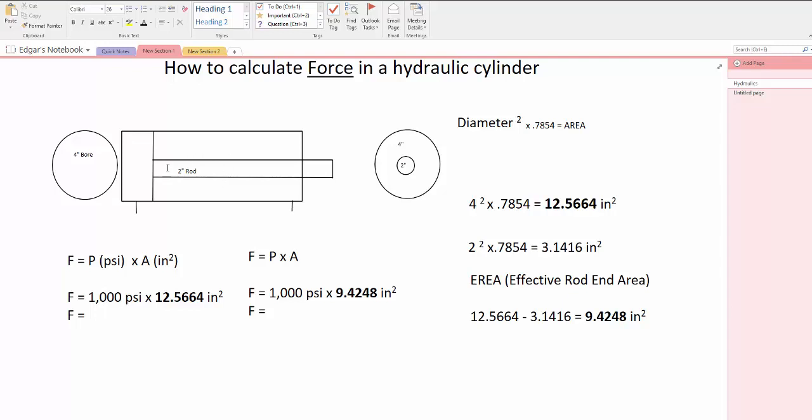For the rod side, we calculated the bore, subtracted the rod area, and came out with the effective rod area, which is this part here—this area from which you apply pressure and generate force.